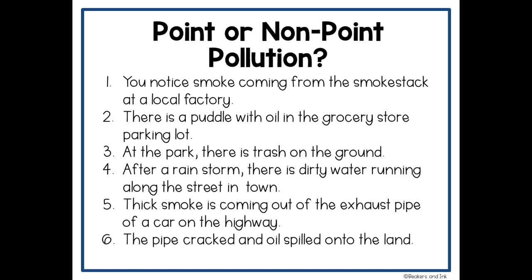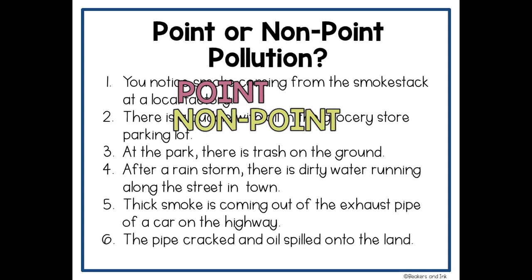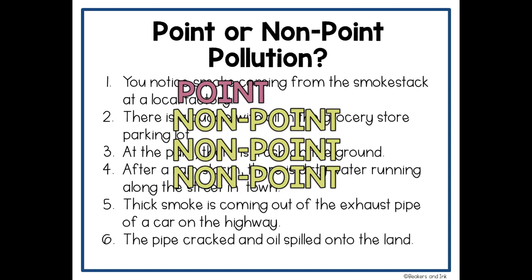Number one: you notice smoke coming from the smokestack at a local factory — point pollution. Number two: there's a puddle with oil in the grocery store parking lot — non-point pollution, because we don't know where the oil came from. Number three: at the park, there's trash on the ground — non-point pollution. The exception would be if you watch someone litter; that would be point pollution. Number four: after a rainstorm, there's dirty water running along the street in town — non-point pollution, because we don't know the source of that water. Number five: thick smoke is coming out of the exhaust pipe of a car on the highway — point pollution; we can see exactly where that pollution is coming from. Number six: the pipe cracked and oil spilled onto the land — point pollution.